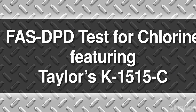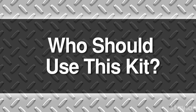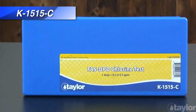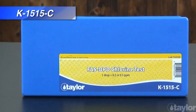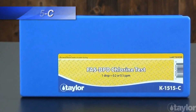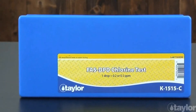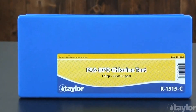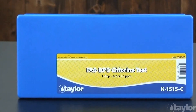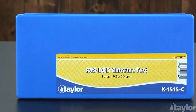FAS DPD test for chlorine featuring Taylor's K1515C. Who should use this kit? Chlorine is used as a sanitizer, oxidizer, and bleaching agent in many commercial, industrial, and recreational applications.